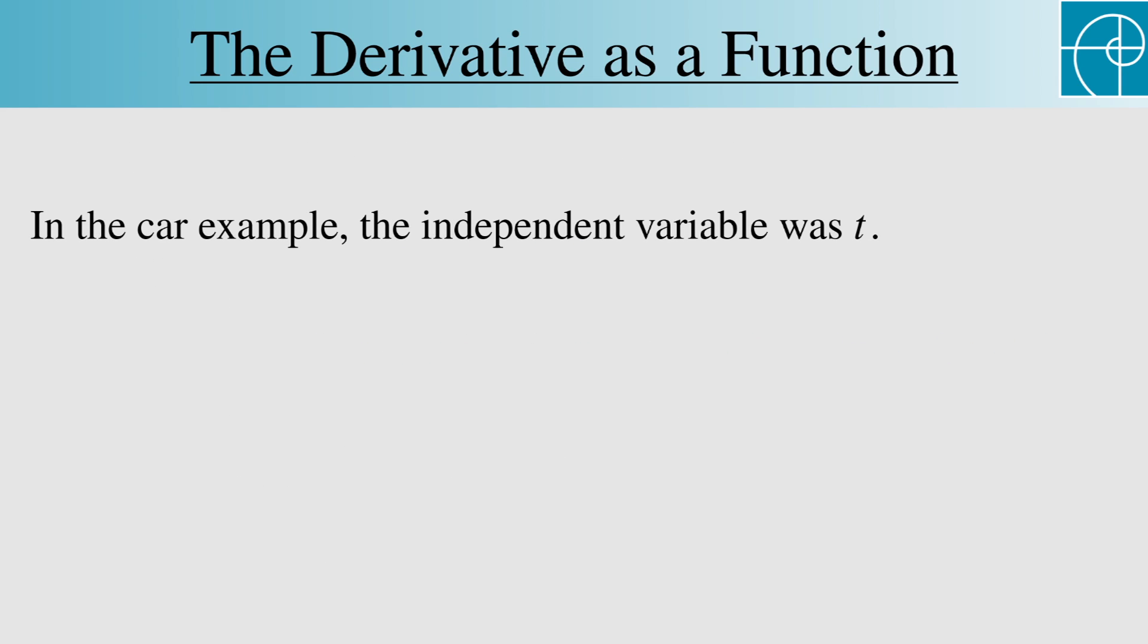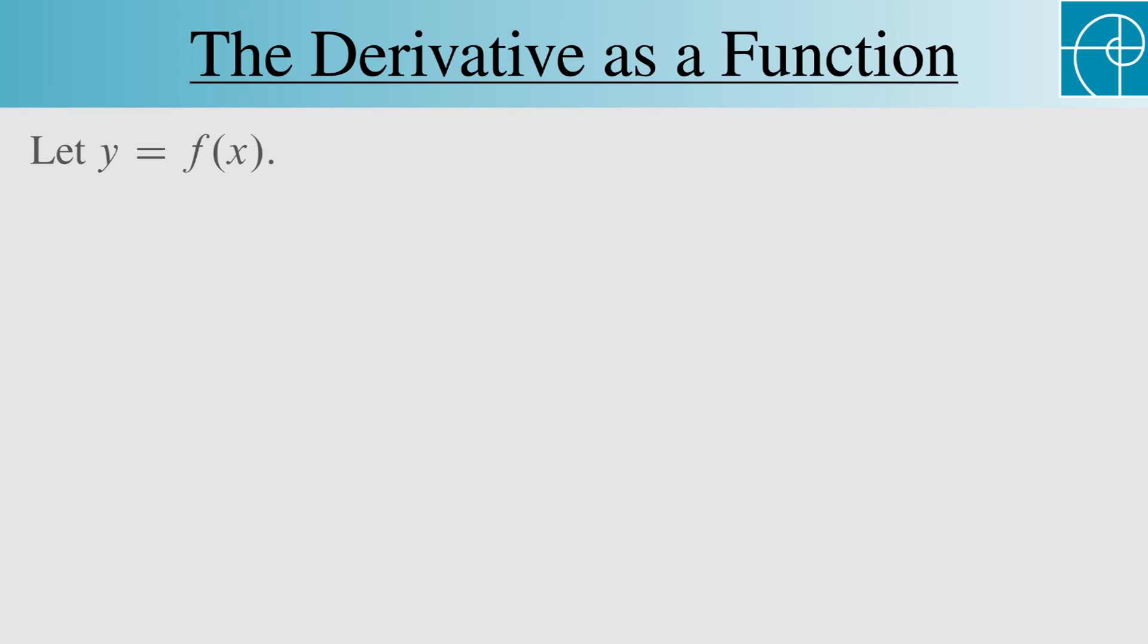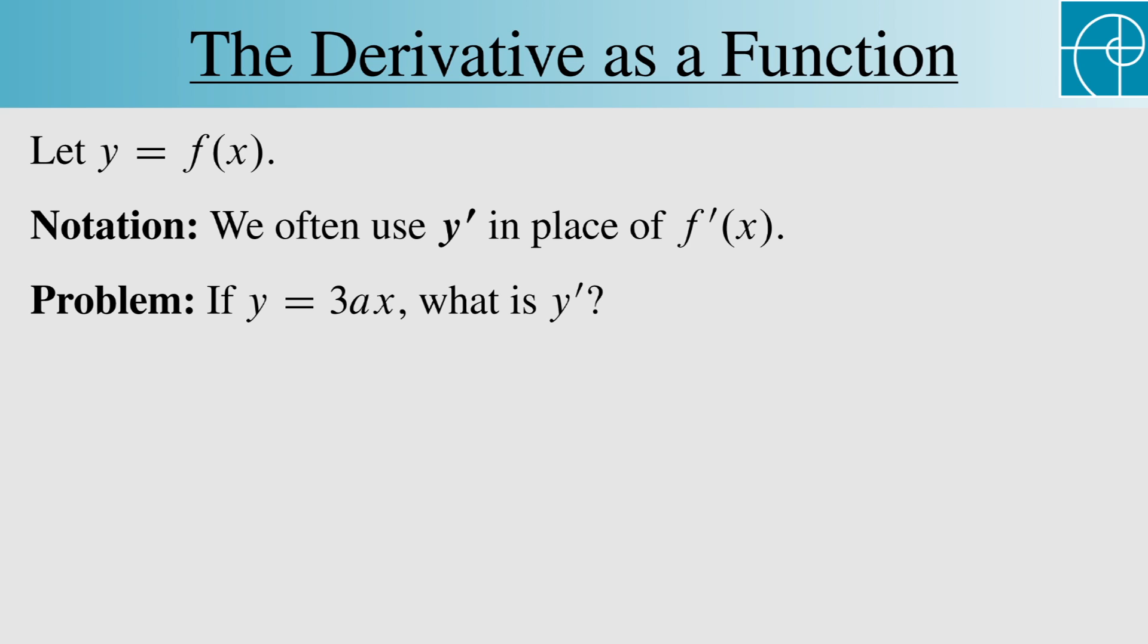In the car example we saw in an earlier video, the independent variable was t, but often we use x as the independent variable. This leads to some notational issues. Let y equal f of x. A very common notation for the derivative of f is y'. But if we said y equals 3ax, then what's y'?